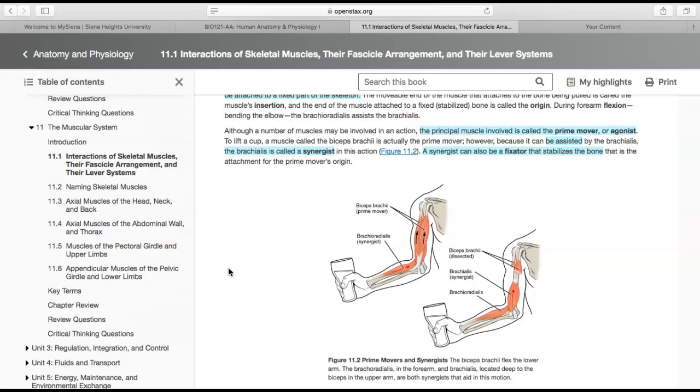However, because it's assisted by the brachialis, we call the brachialis a synergist. If you've heard the term synergy, that might make sense—it's like two things doing the same action. The biceps brachii is the prime mover, but it's assisted by the brachioradialis, which is the synergist. A synergist can also be called a fixator if it's stabilizing the bone that is the attachment for the prime mover's origin.